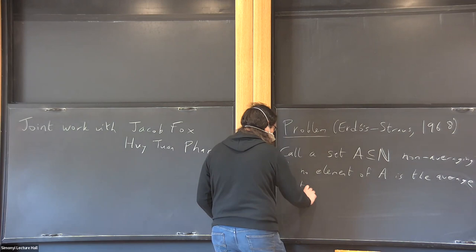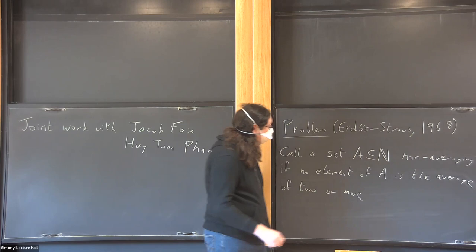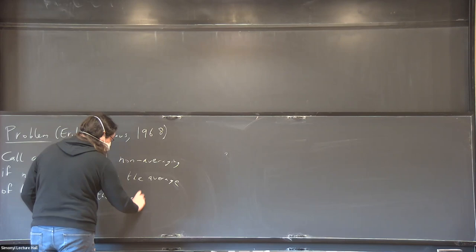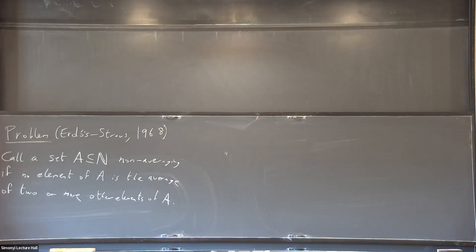If you have the same condition but without the 'or more', then it's just Roth's theorem. The main difference here is that you're allowing many possible elements — you're allowing an element to be the average of many elements of A. For Roth's theorem there's been spectacular progress just in the last couple of weeks, but the methods are very different from what I'm going to talk about.